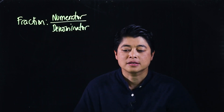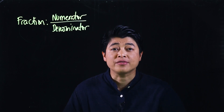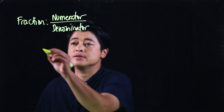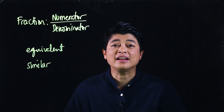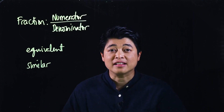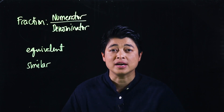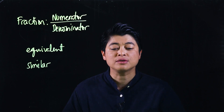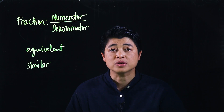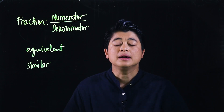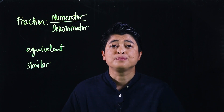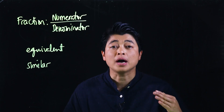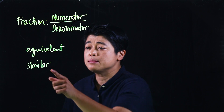A fraction is composed of a numerator and a denominator. This lesson covers equivalent and similar fractions. For equivalent fractions, they look different but are actually the same value. To find an equivalent fraction, you multiply the numerator and denominator — the top and bottom — by the same number. For similar or simplified fractions, you divide the top and bottom by the same number.